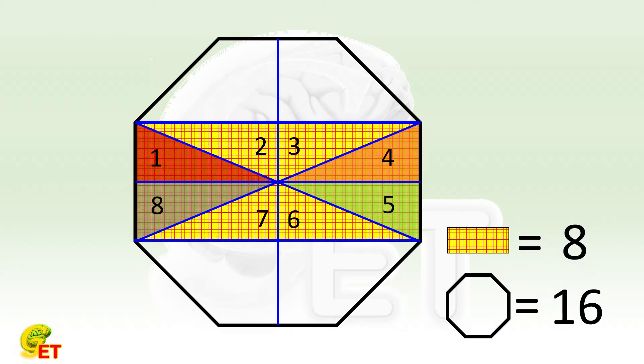The ratio of areas is therefore equal to 8 over 16. So it equals 1 half. We are done.